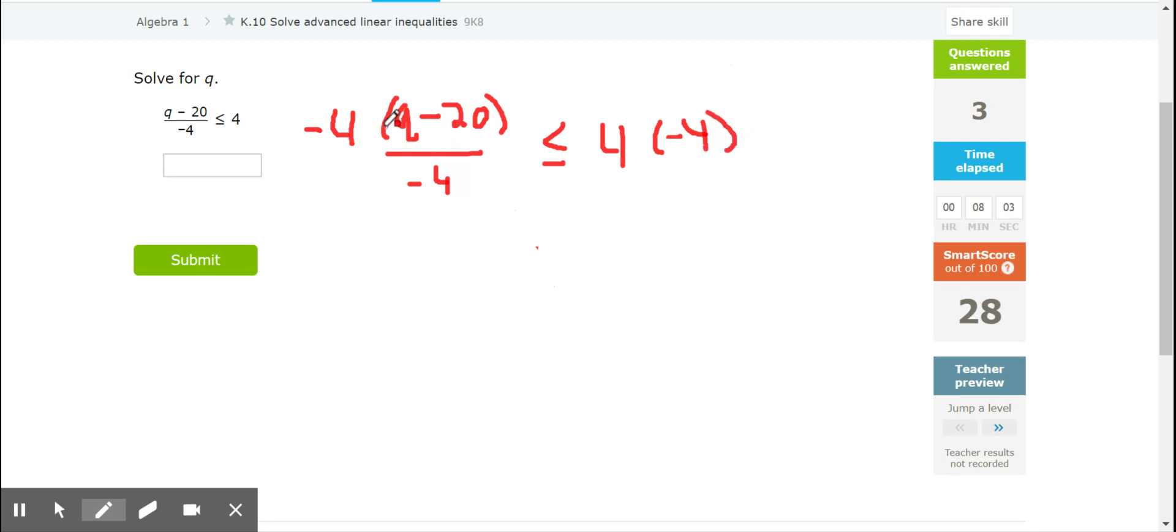Now, I'm multiplying both sides of the inequality by a negative value. So from less than or equal to, it becomes greater than or equal to, and 4 times negative 4 is negative 16.